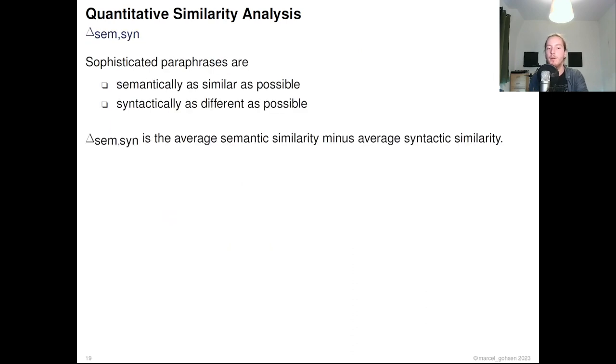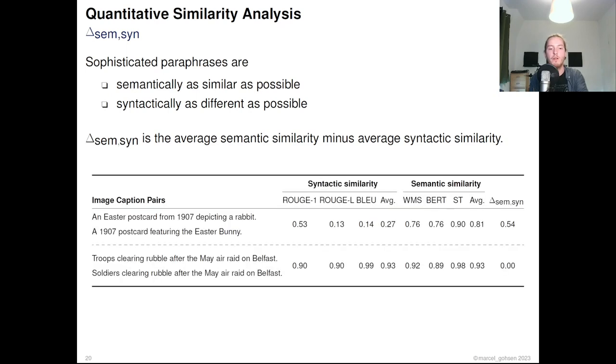Based on these metrics, we propose a new metric that should judge a paraphrase's sophistication according to these rules. A sophisticated paraphrase is semantically as similar as possible, by being syntactically as different as possible. Thus, our new delta metric is the average normalised semantic similarity minus the average normalised syntactic similarity between a pair of mutual paraphrases. For example, we see that the first caption pair is lexically and syntactically quite different by being similar on a semantic level. This results in a delta of 0.54. The second caption pair only differs in one word and is therefore very similar on lexical and syntactic level and obviously very similar semantically as well. This results in a delta of 0.